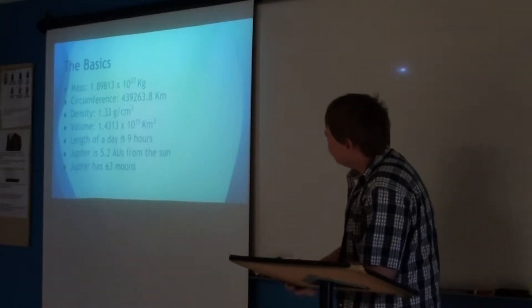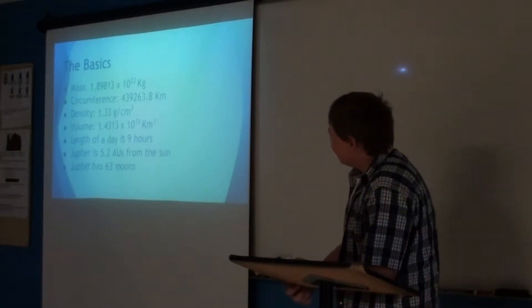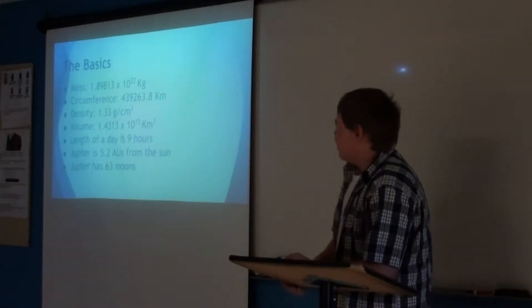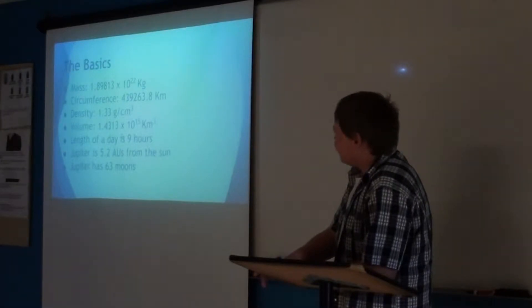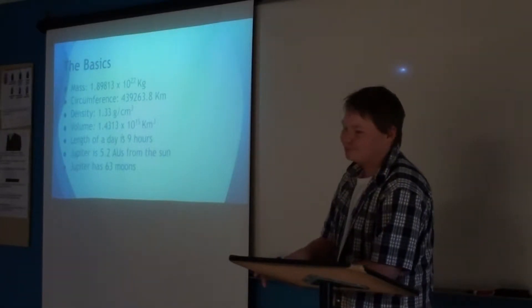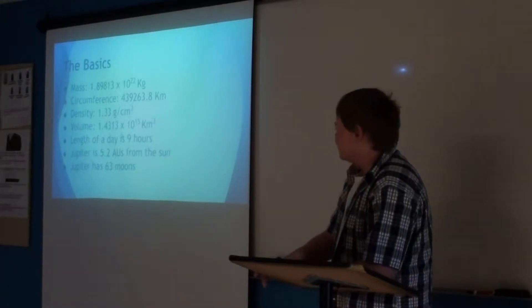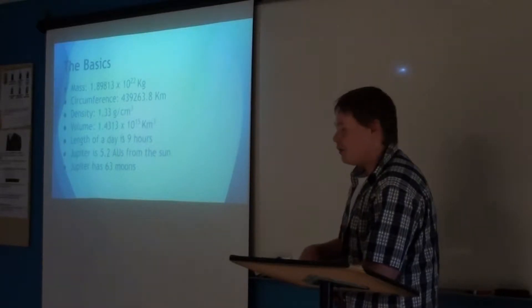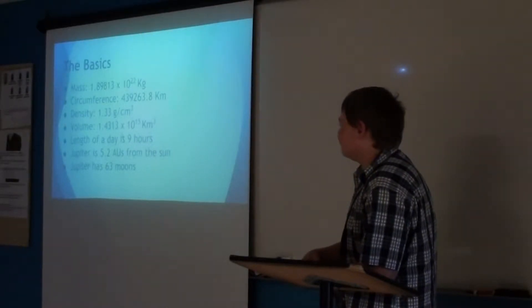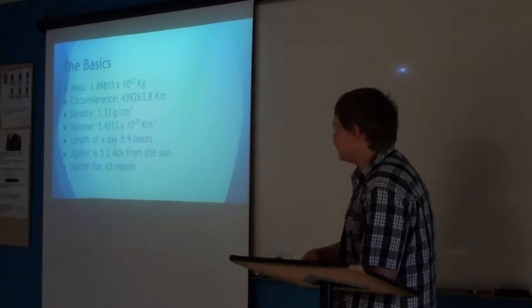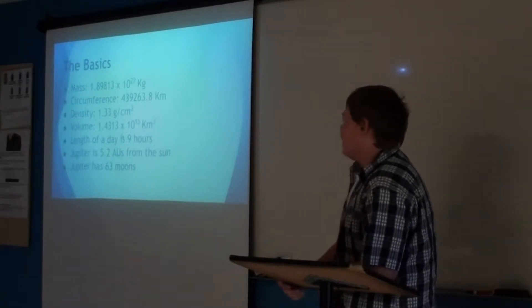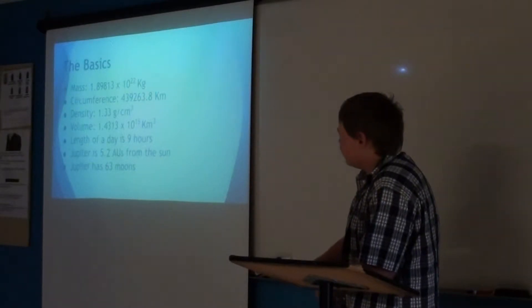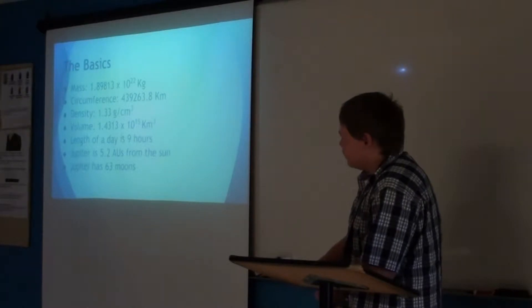So the basics: the mass of Jupiter is 1.8913 times 10 to the 27th kilograms. The circumference is 439,263.8 kilometers. The density is 1.3 grams per centimeter cubed. The volume is 1.34313 times 10 to the 15th kilometers to the 3rd power. Length of day is 9 hours, and Jupiter is 5.2 AU from the sun, and Jupiter has 63 moons.